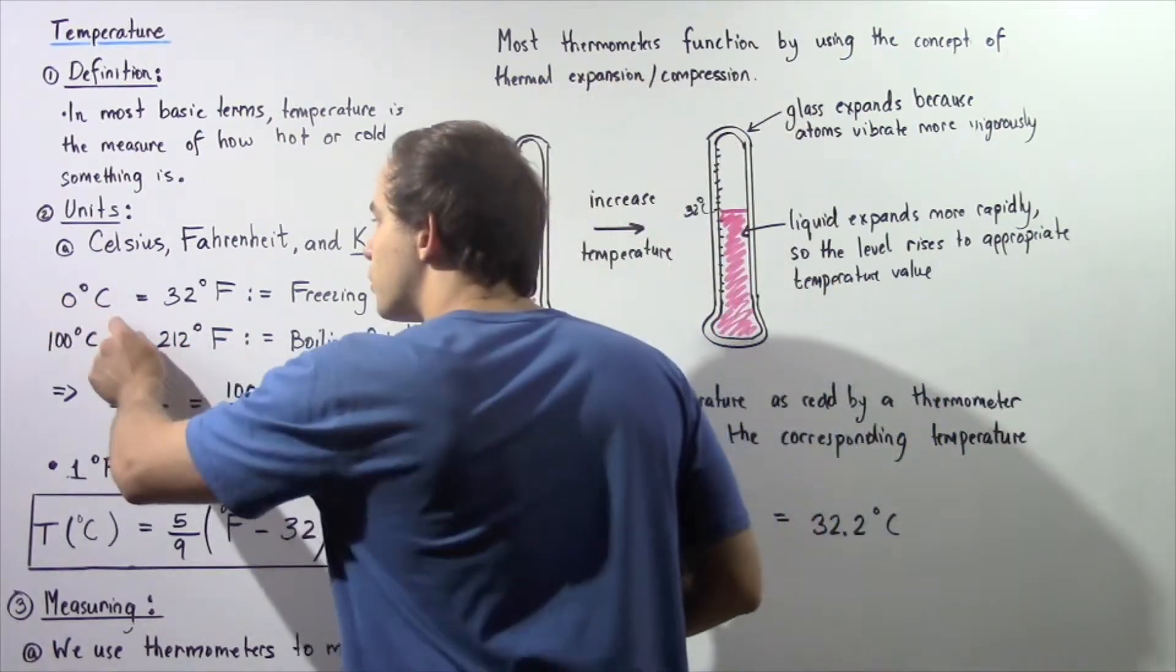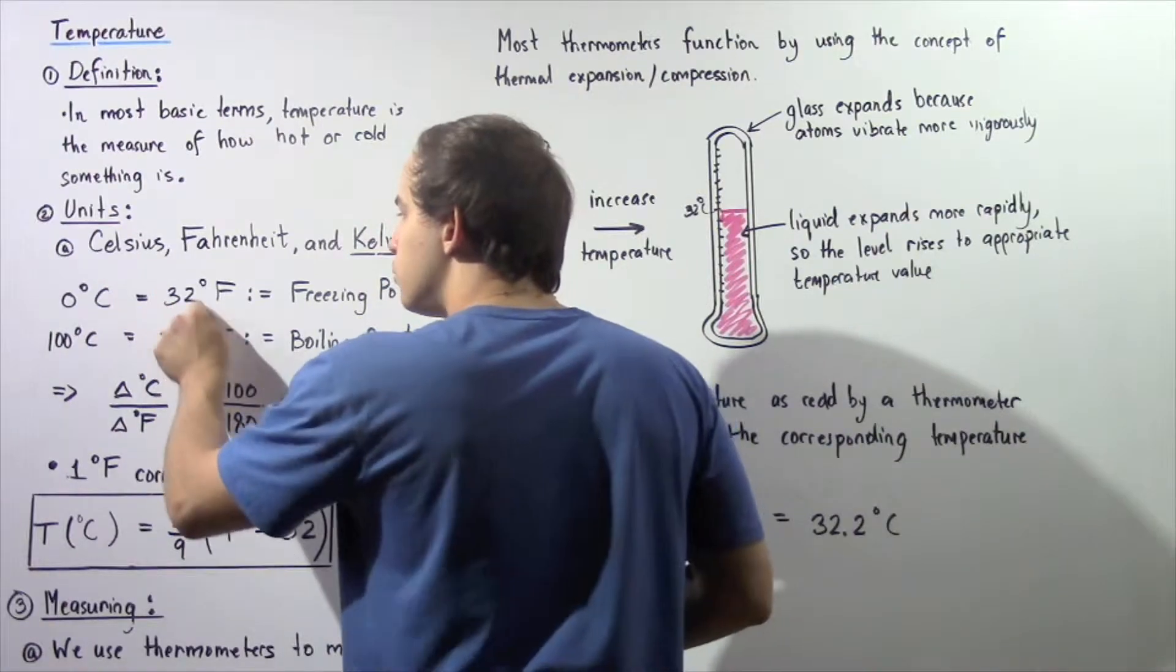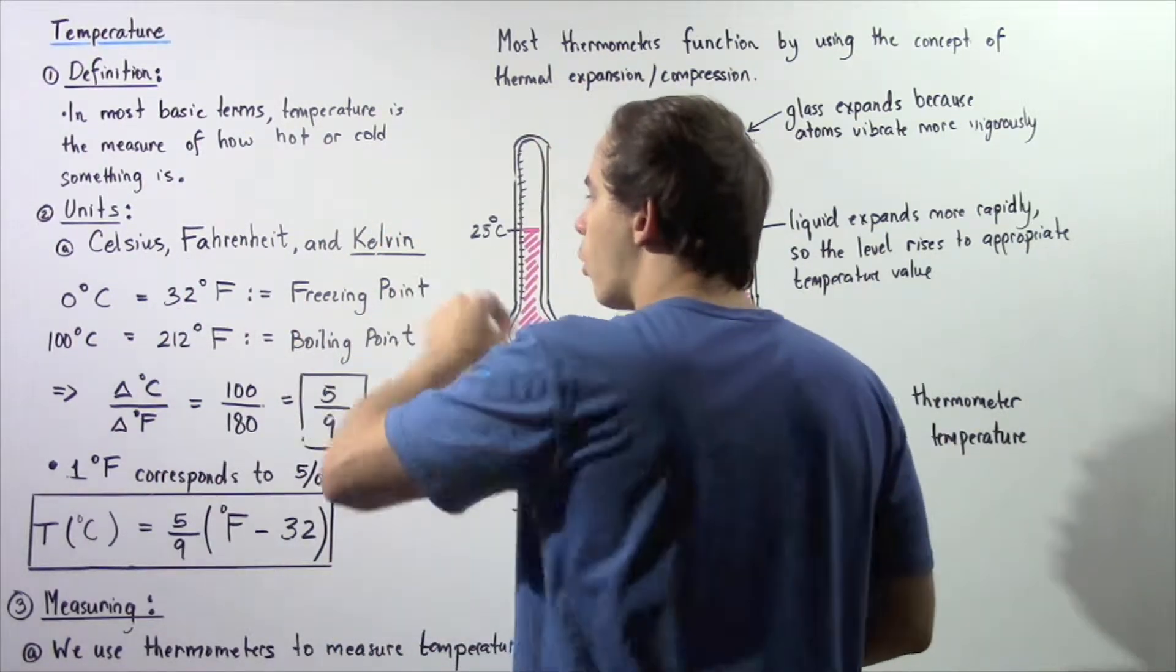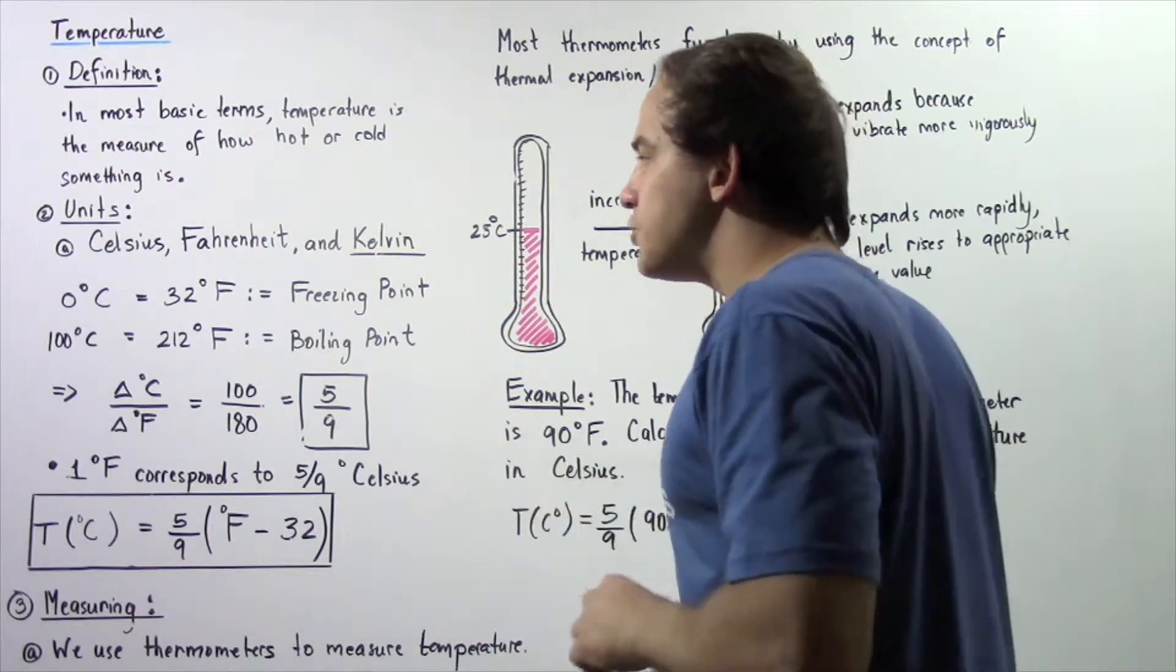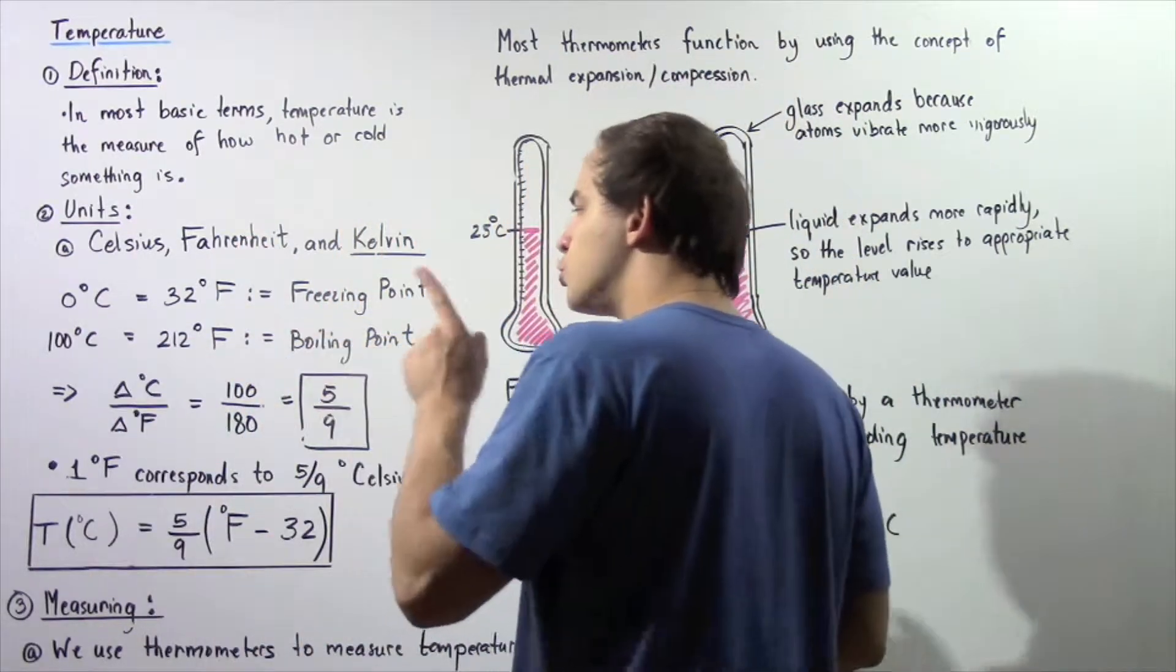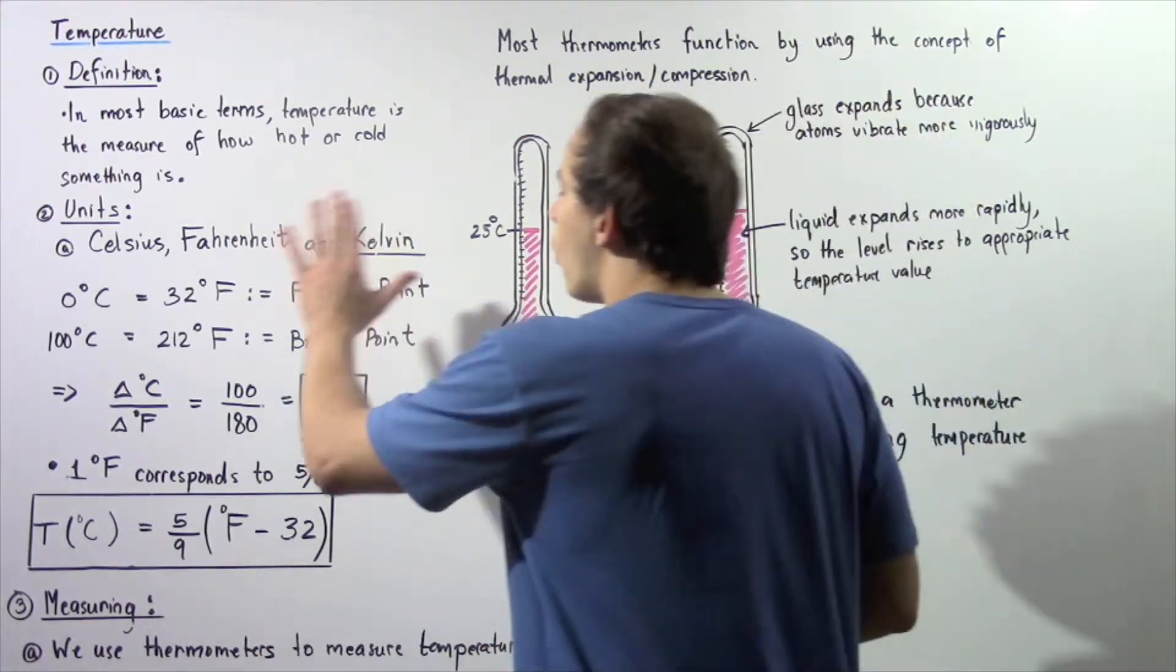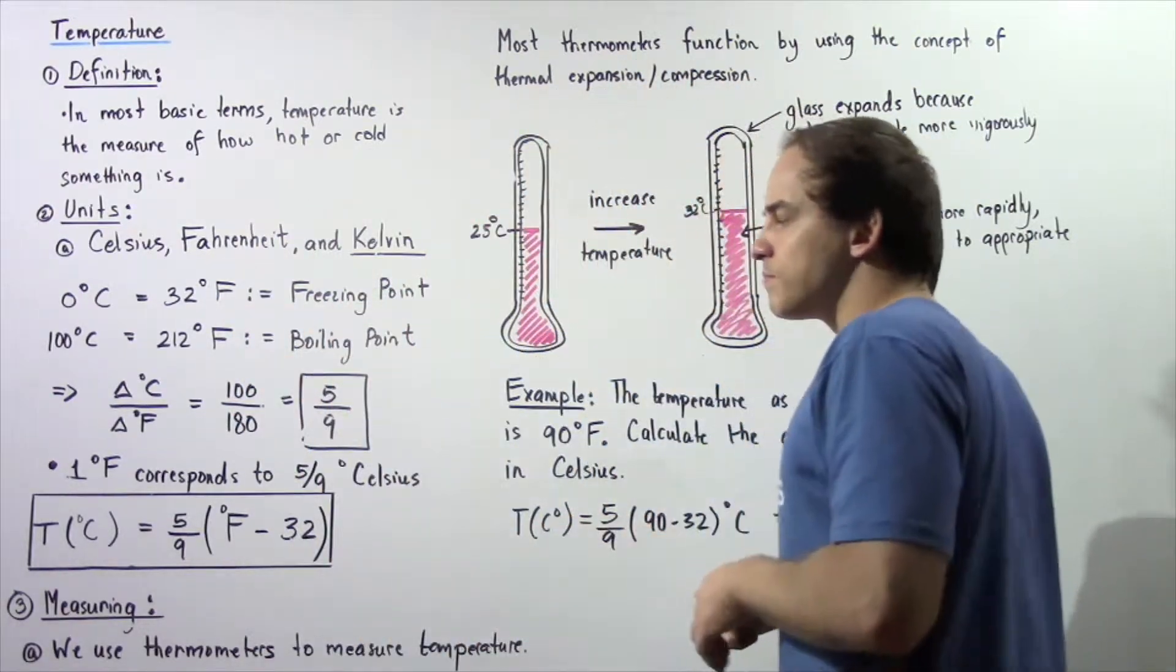We choose zero degrees Celsius or 32 degrees Fahrenheit to correspond to the freezing point of water, and we choose 100 degrees Celsius or 212 degrees Fahrenheit to correspond to the boiling point of water.